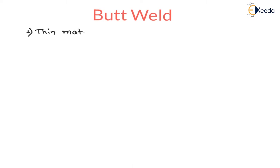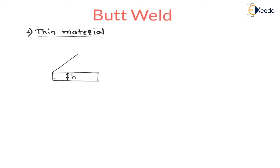First we will see for thin plates, or thin material. Let us consider two plates which are very thin, connected with the help of a butt joint. Let us say there is one plate of thickness eH — this is the thickness of the plate — and having some length eL.